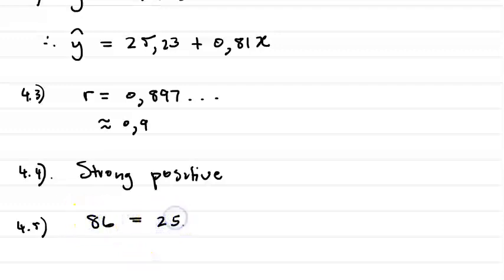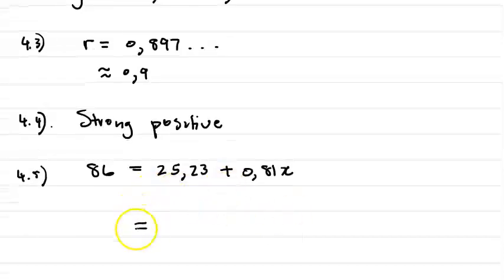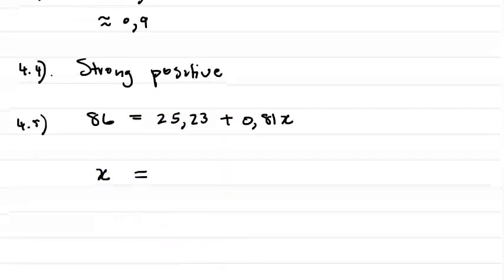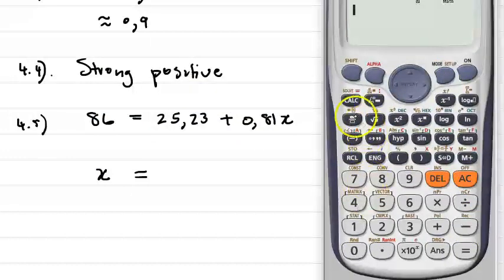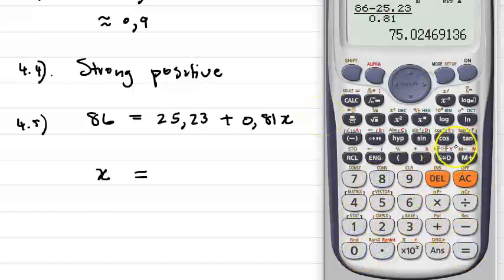x equals to 25.23 plus 0.81x and we're going to solve for x. So let us do that. So x is going to be, so solving for x is going to be 86 minus 25.23 all over 0.81. And that's equal to 75.0246.